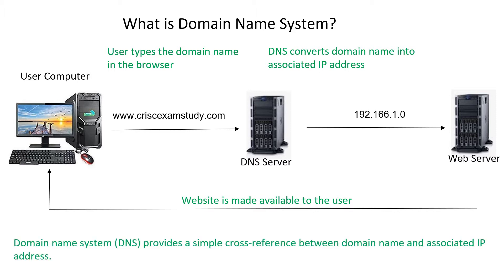In simple terms, the Domain Name System provides a cross-reference between a domain name and its associated IP address. For example, the user typed www.criskexamstudy.com, and it was converted into an IP address by the Domain Name System.